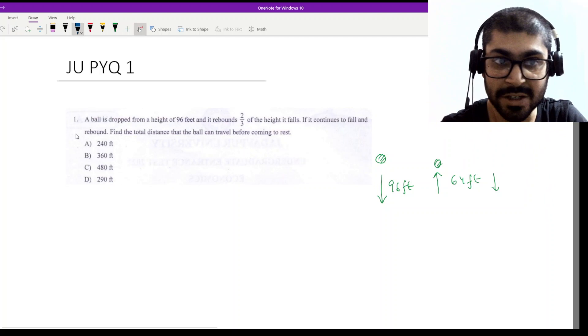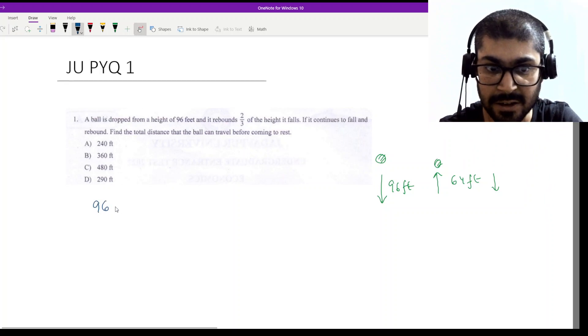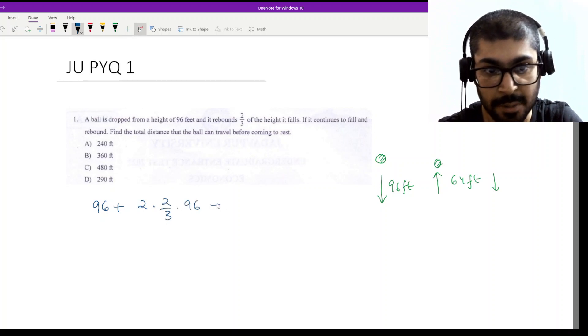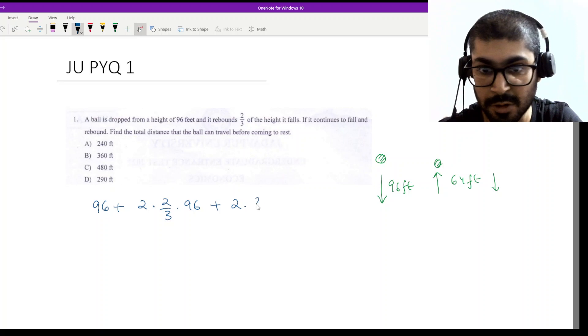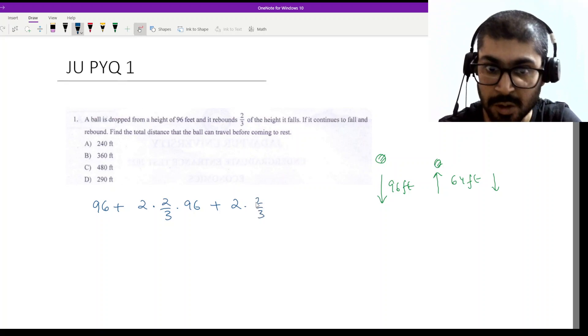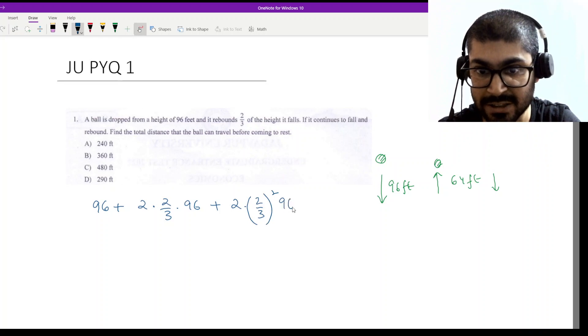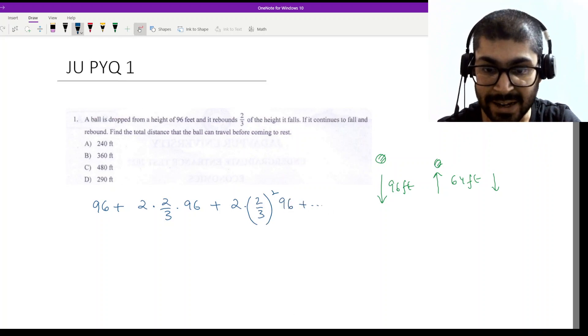The calculation here is done as 96 plus twice into 2/3 into 96, plus twice into (2/3)² into 96, and so on. This goes on infinitely.